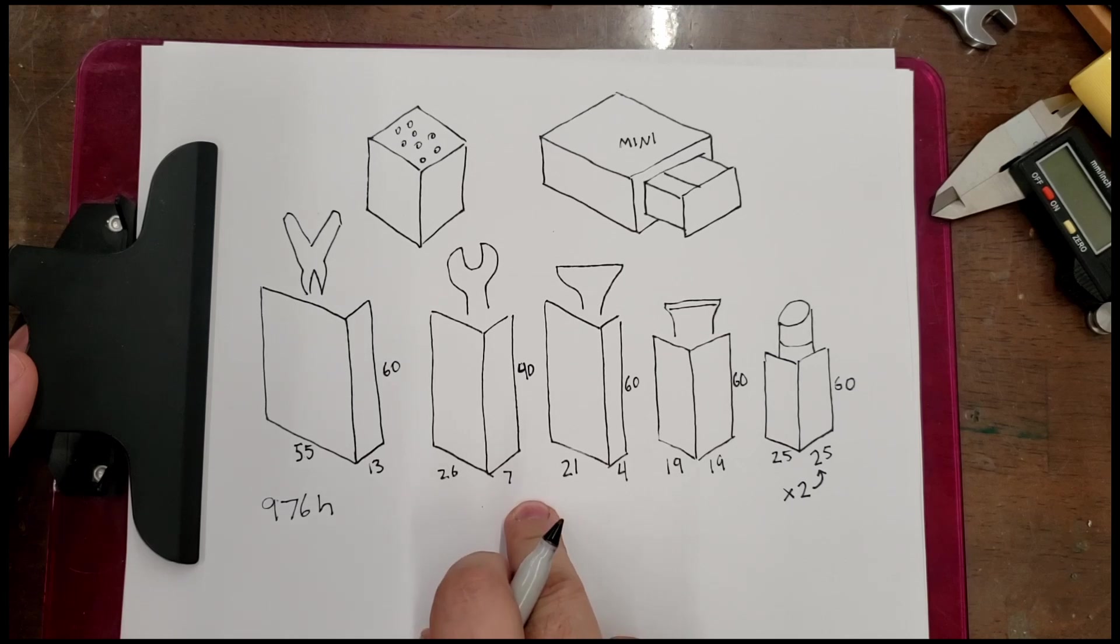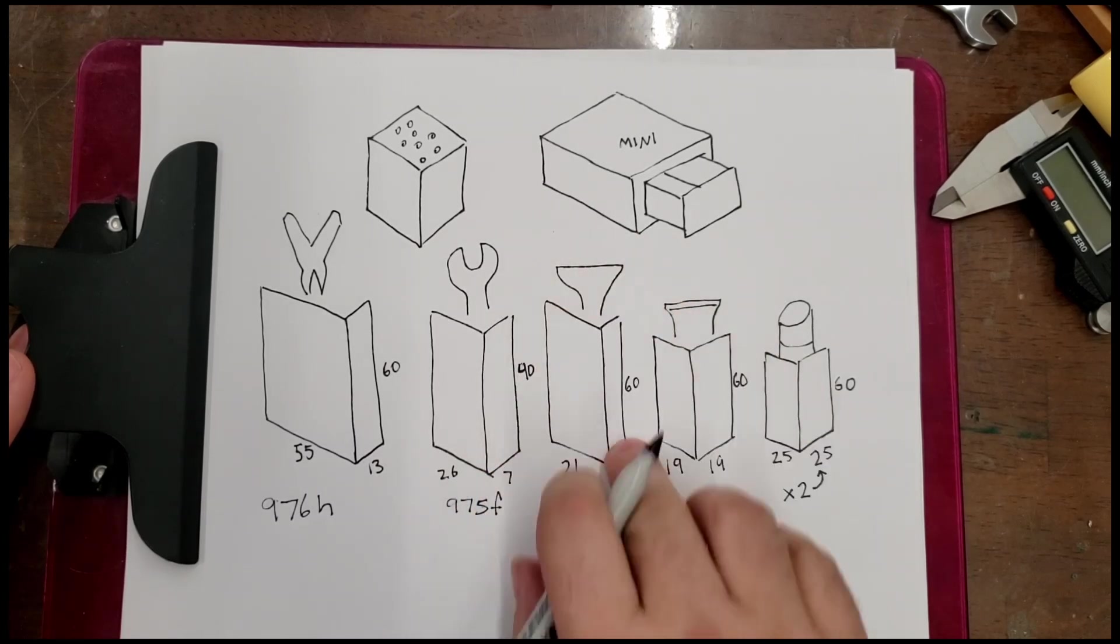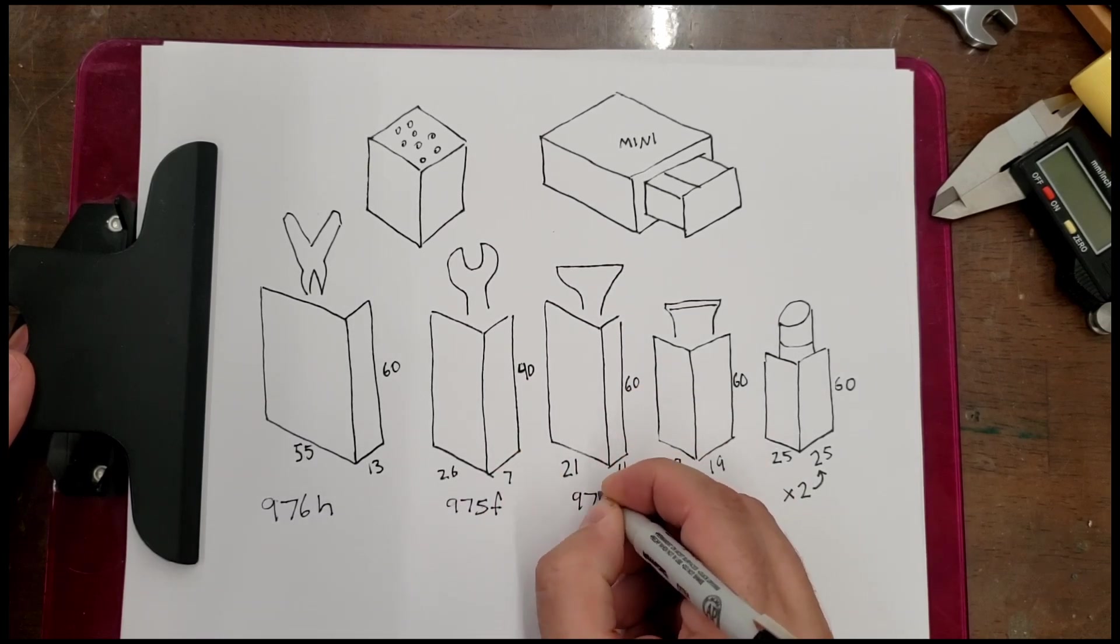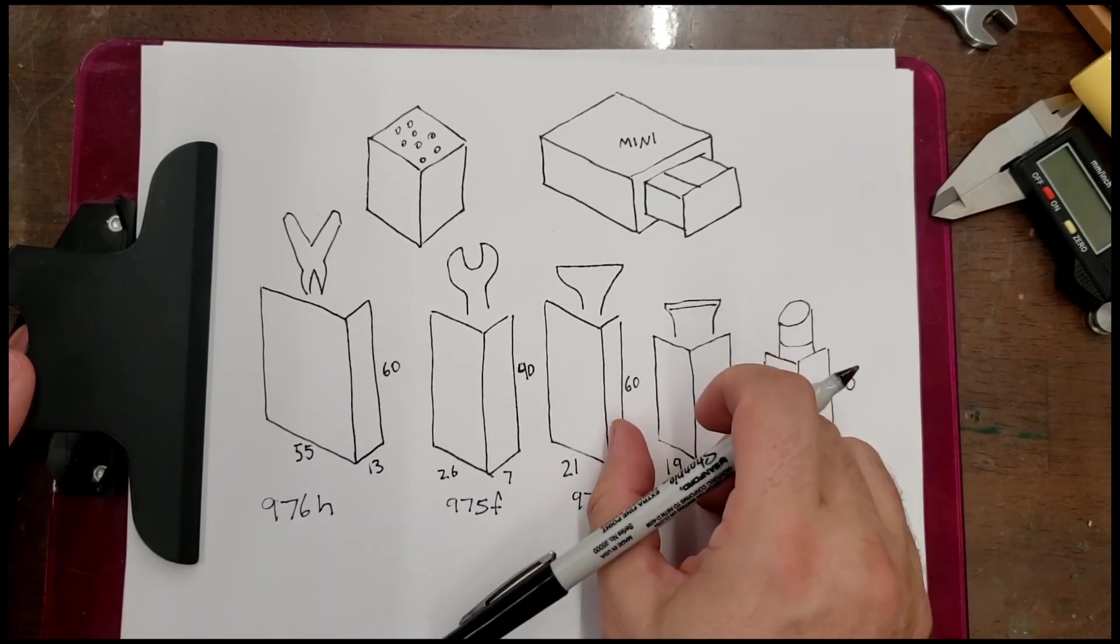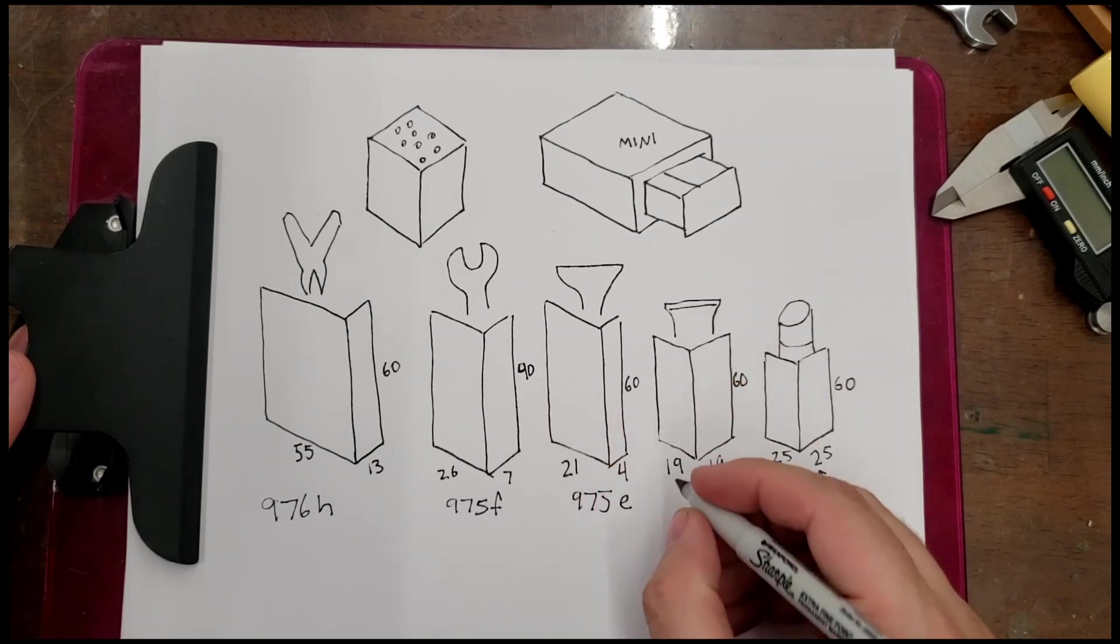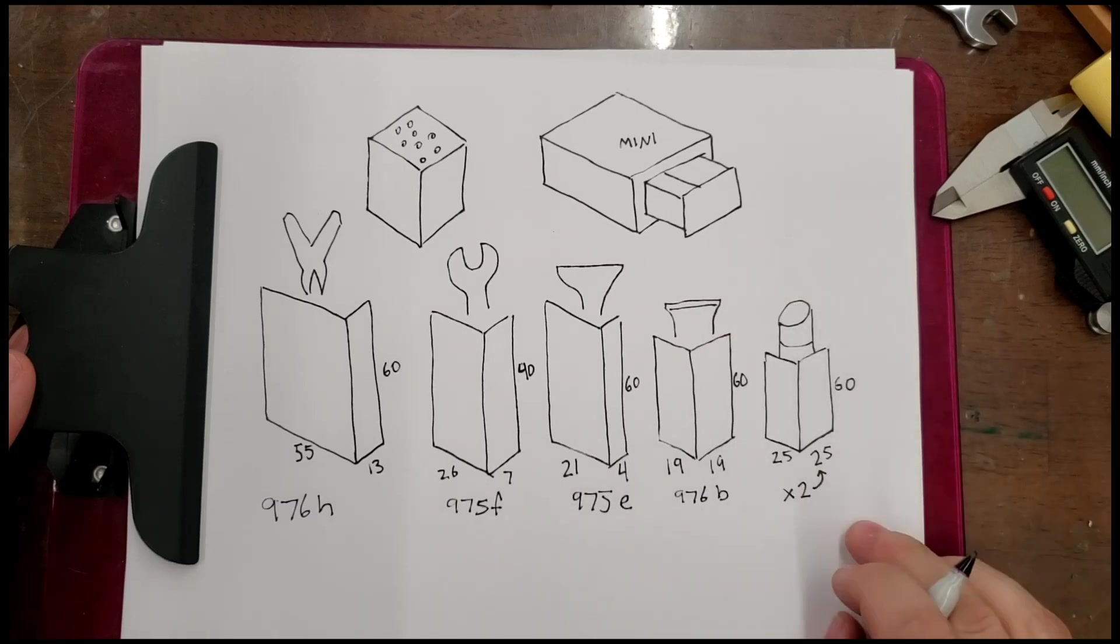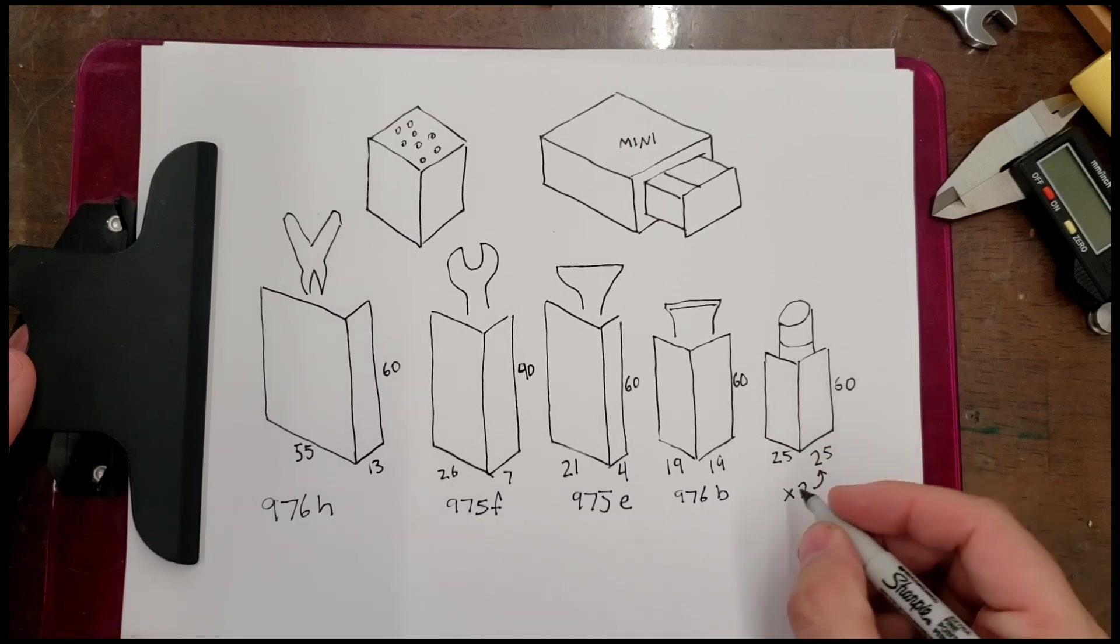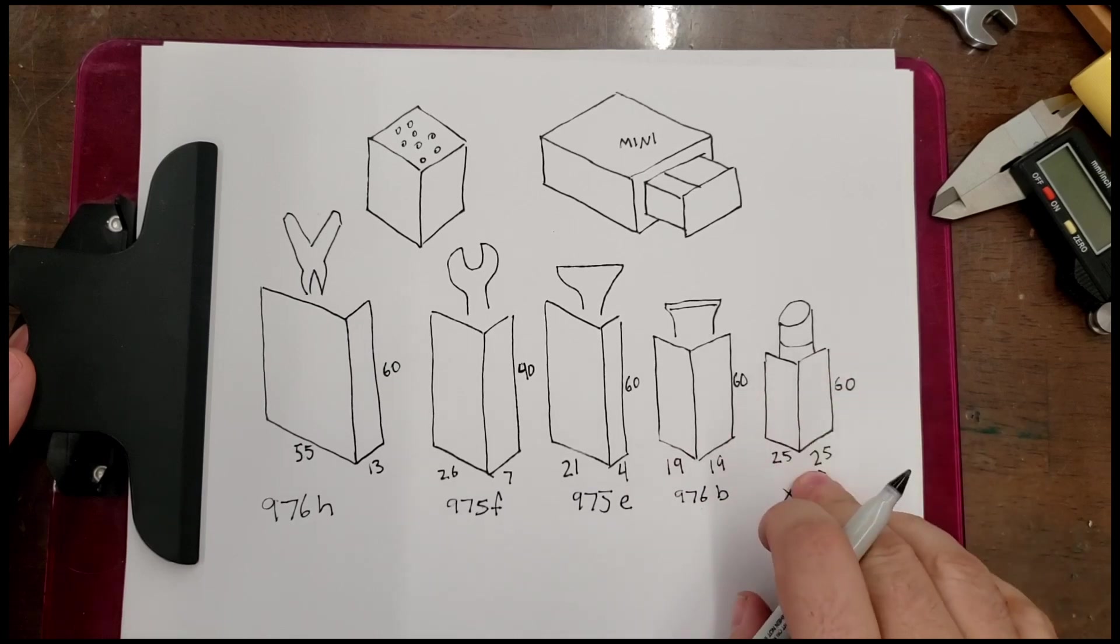Moving on to the wrench. We need something that's at least seven by 26 by 40. That is going to be 975F. Looking at the scraper, we're going to need at least four by 20. That's going to be again in the 975 range, but let's see, we only need it 60. So that's going to be E, the 19 by 19 is going to be a 976. And I think it's going to be B because we only need it to be 60 tall.